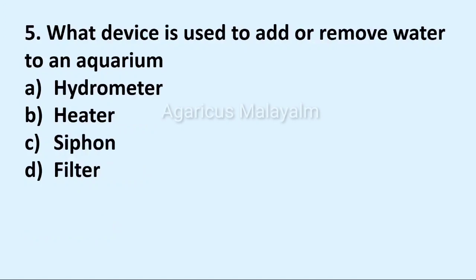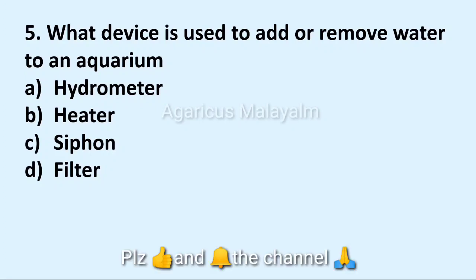Fifth question: What device is used to add or remove water to an aquarium? Answer options: Option A Hydrometer, Option B Heater, Option C Ziphone, Option D Filter. Correct answer: Option B Heater.